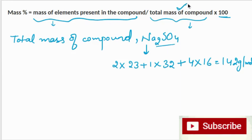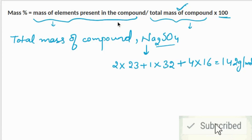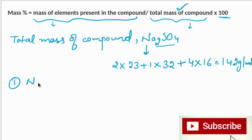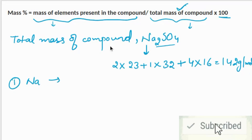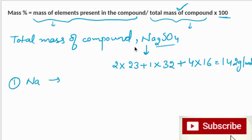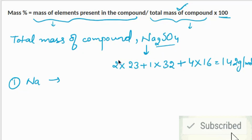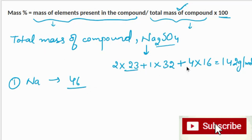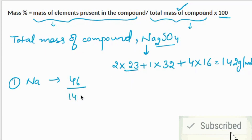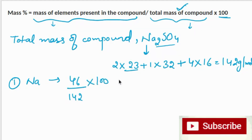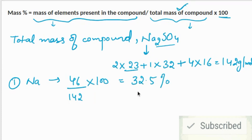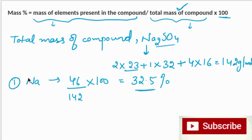Now we have the total mass of the compound. First, let's find the mass percent of sodium. There are 2 sodium atoms, so the mass of sodium is 46 grams. Using the formula: 46 divided by 142, multiplied by 100 — this gives us the mass percent of sodium, which is 32.5%.